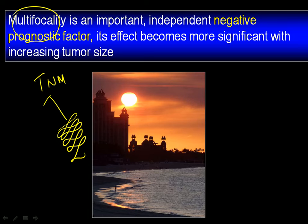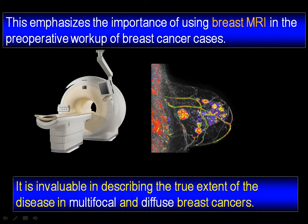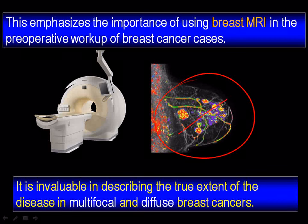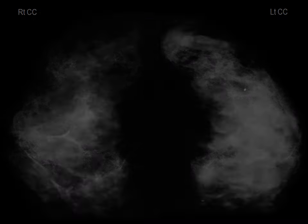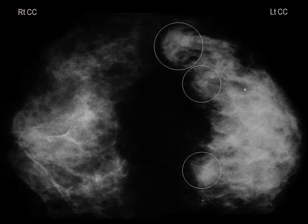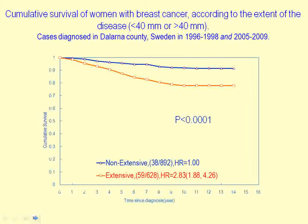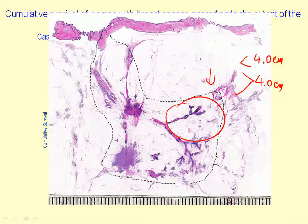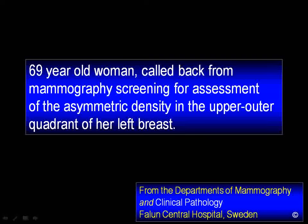Most breast cancer deaths are actually in these two groups. How are we going to be able to tell the surgeons and oncologists about the extent of the disease if we don't do breast MR? It is invaluable to describe the true extent of the disease. Even if it's multifocal disease localized within 4 cm, or in a larger area than 4 cm, there is a significant difference in outcome. We can conclude that multifocal disease is a very independent negative prognostic factor.